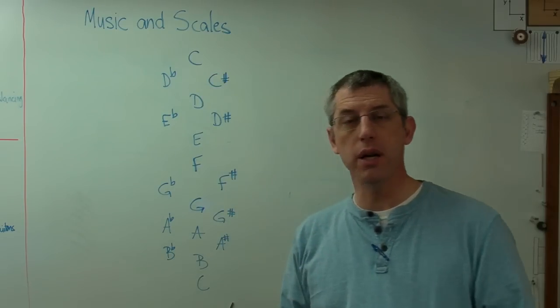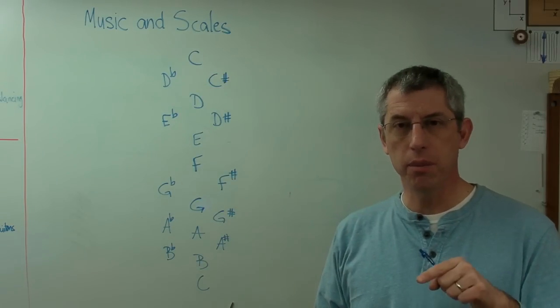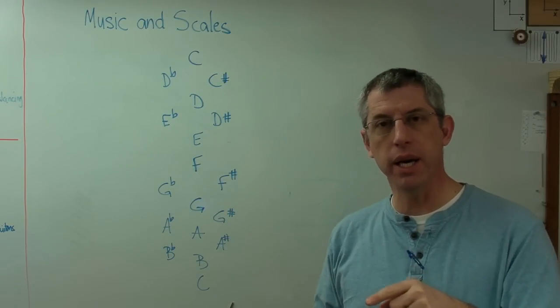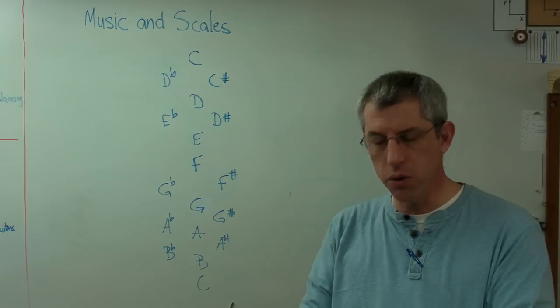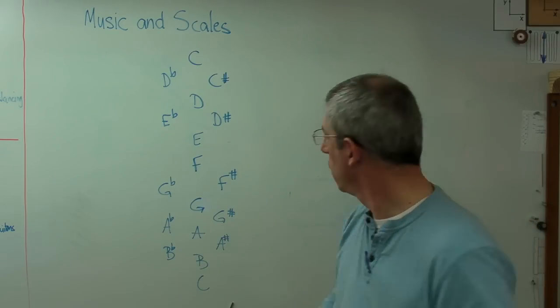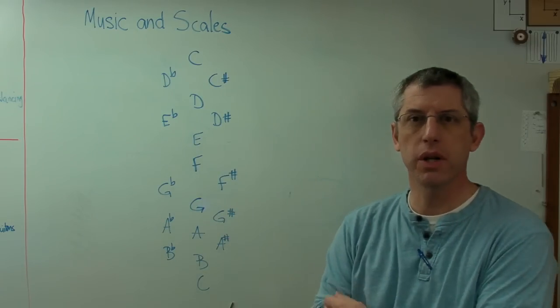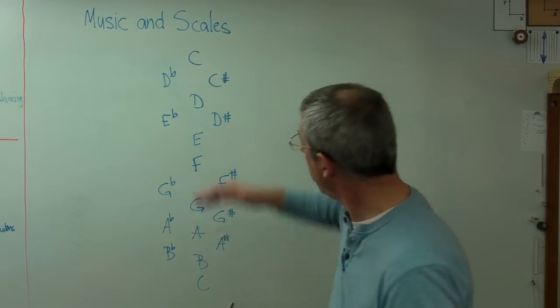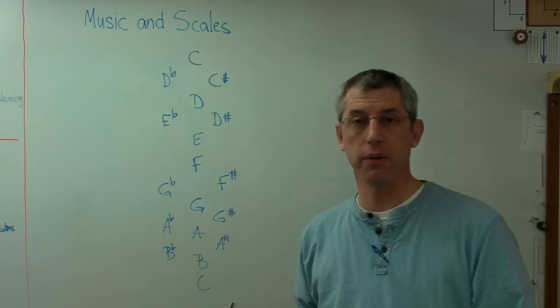The way you see this is go look on a piano. Notice on a piano there'll be white key, black key, white key, black key, and then all of a sudden there'll be no black key. There'll be two white keys right next to each other. Well, that's either E and F or B and C depending on which one you're looking at. So a piano keyboard has this laid right out in front of you.